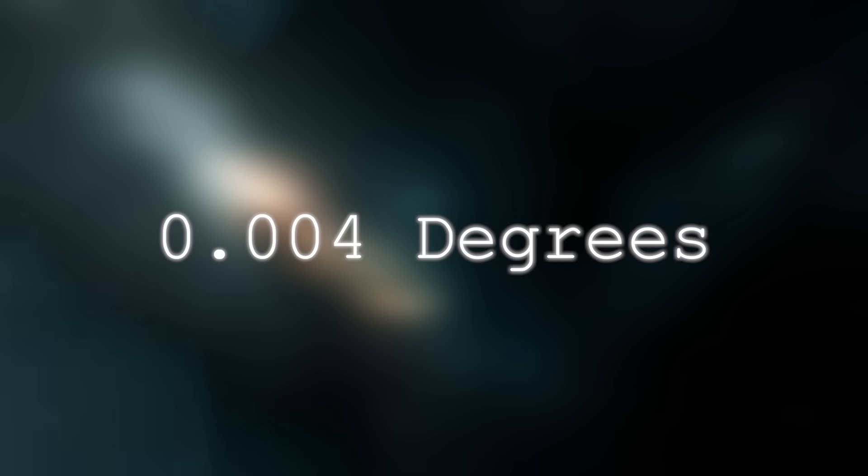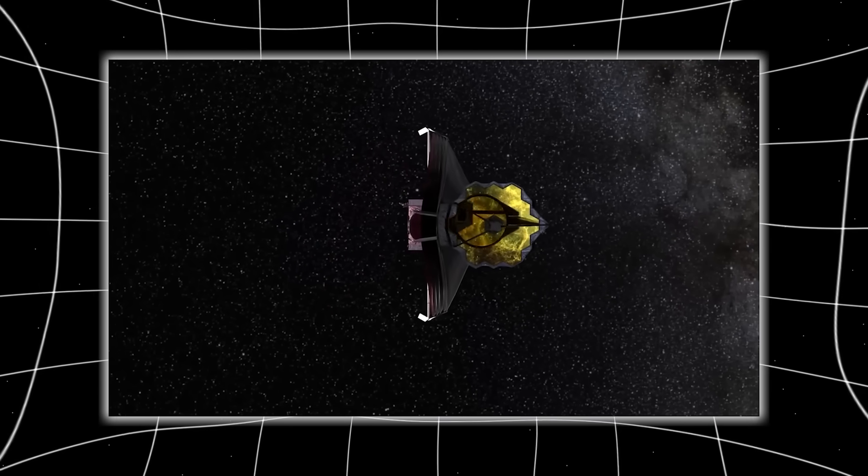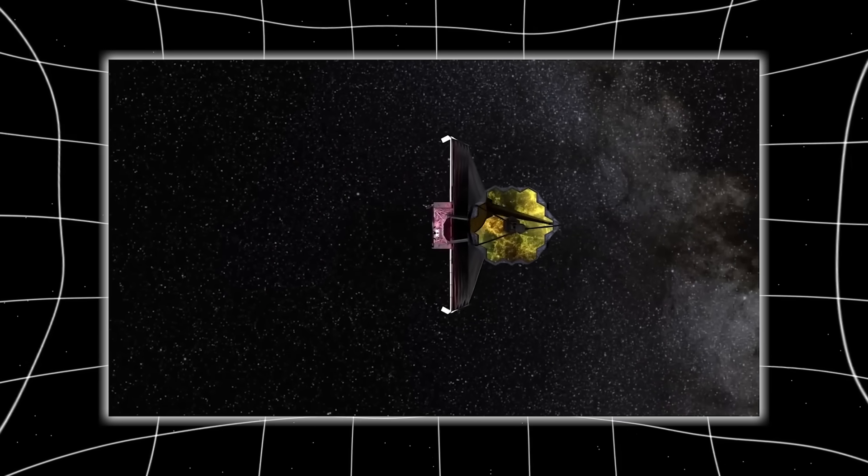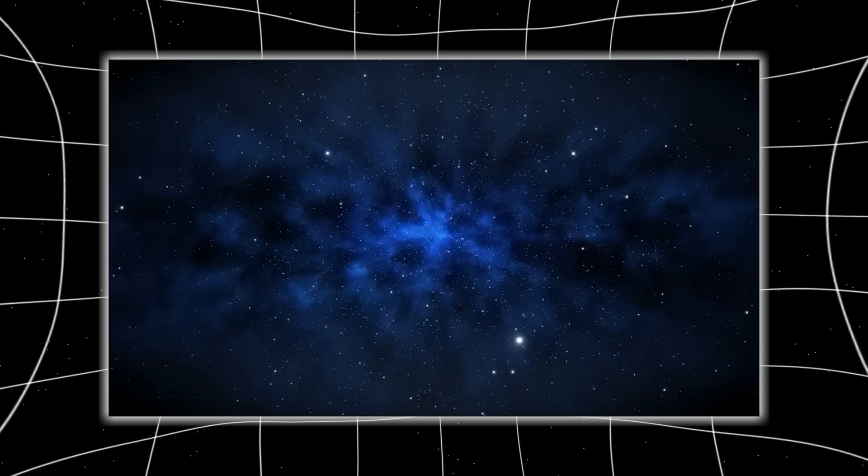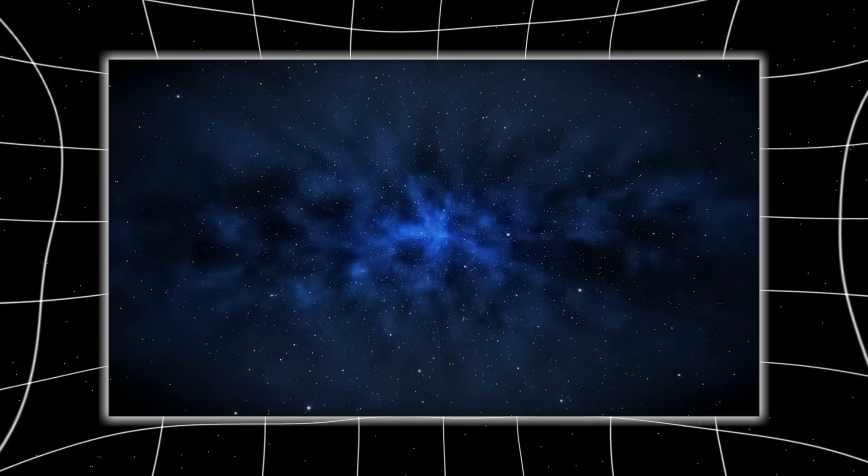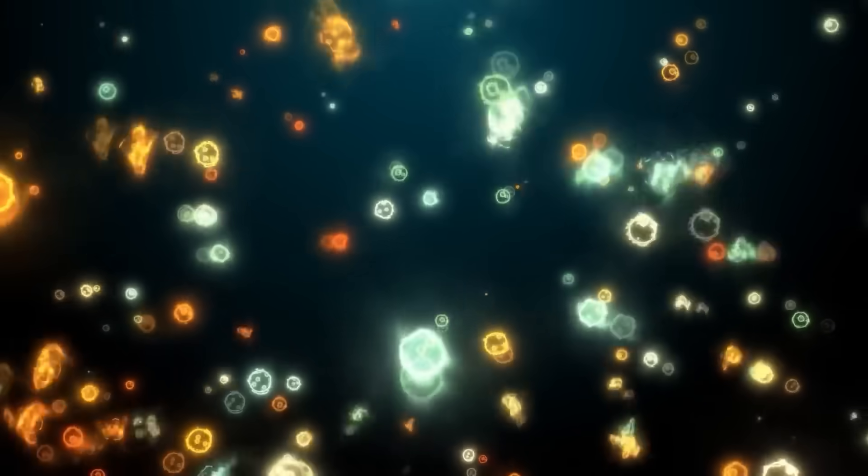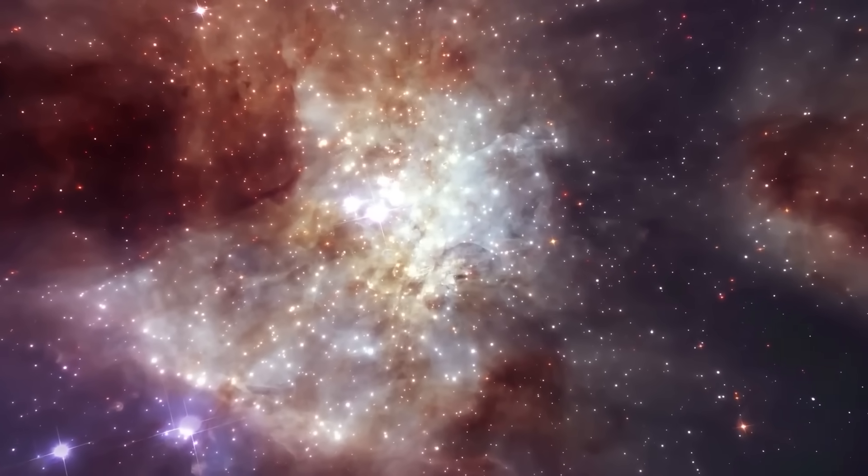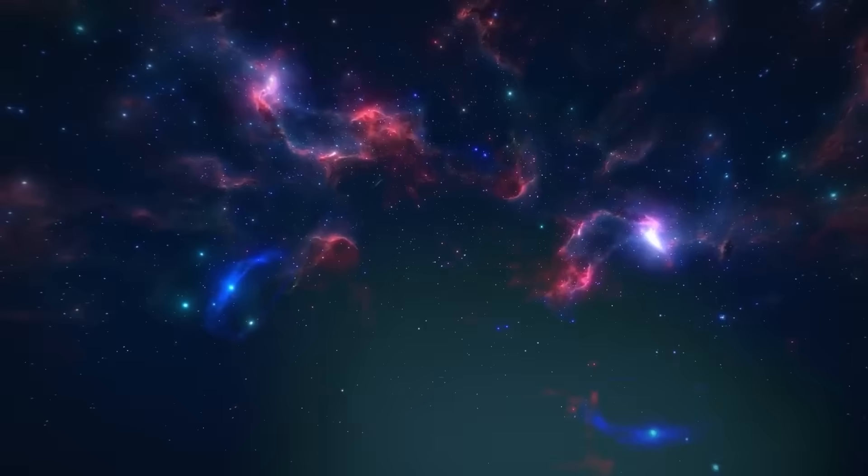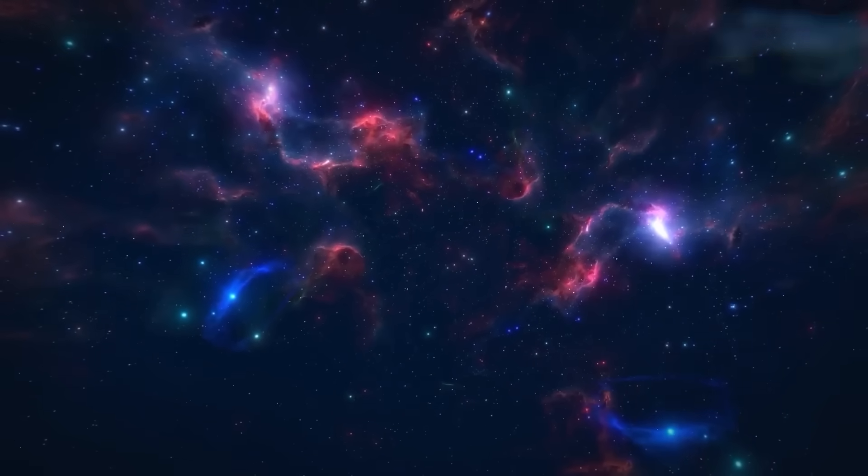It reappeared just 0.004 degrees off from its original position, an imperceptible fraction to the human eye, but catastrophic to the calculations of scientists. Because if something can displace itself without leaving a trail, it means it's not bound by the speed of light. It means it's not bound by time. The only known parallel to this kind of behavior exists in quantum theory, entangled particles reacting instantly across vast distances. But this wasn't subatomic. This was a structure the size of a small moon, behaving as if the laws of classical physics were a mere suggestion. When astrophysicists simulated the movement, they found something even more unnerving. The pattern of its reappearances formed a spiral, pointing inward, toward Earth.